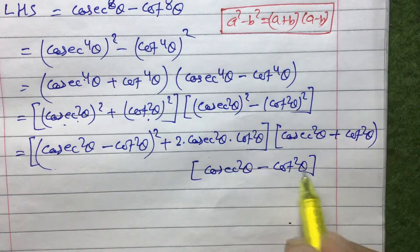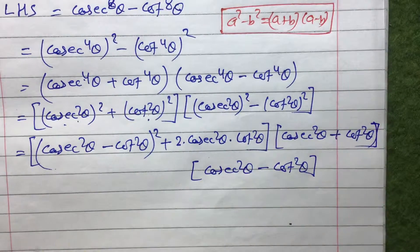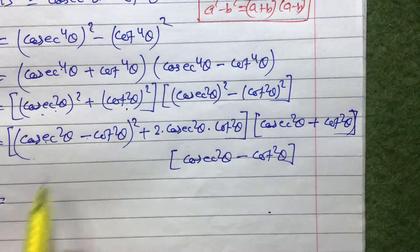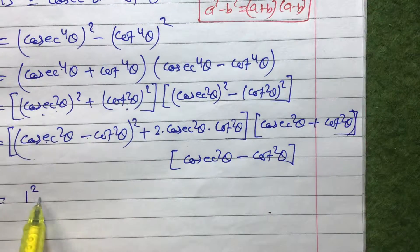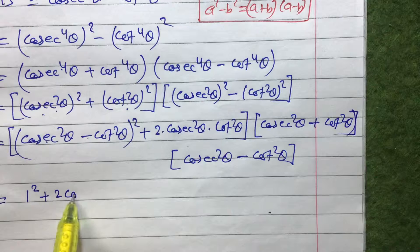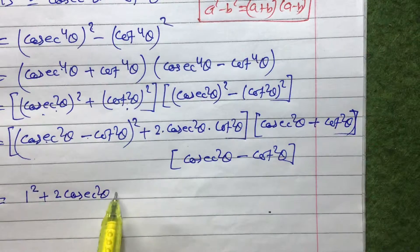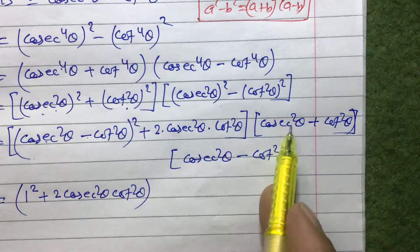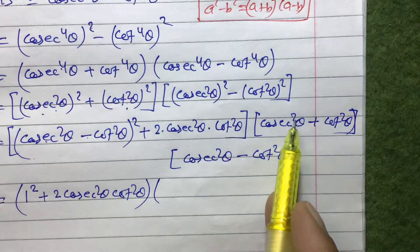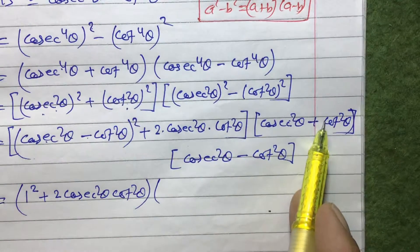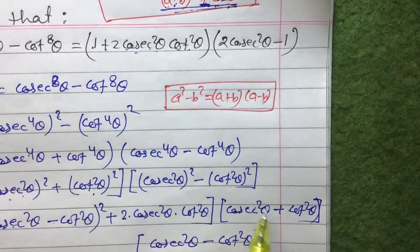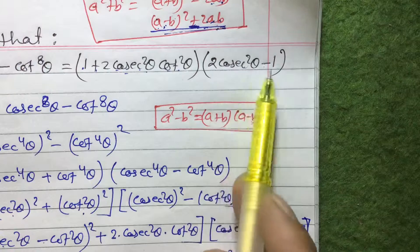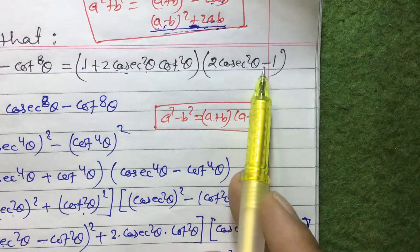Now, cosec²θ - cot²θ = 1, so (cosec²θ - cot²θ)² = 1² = 1. So the first factor becomes 1 + 2cosec²θ·cot²θ. For the second factor, we still have cosec²θ + cot²θ — we need to simplify this further.